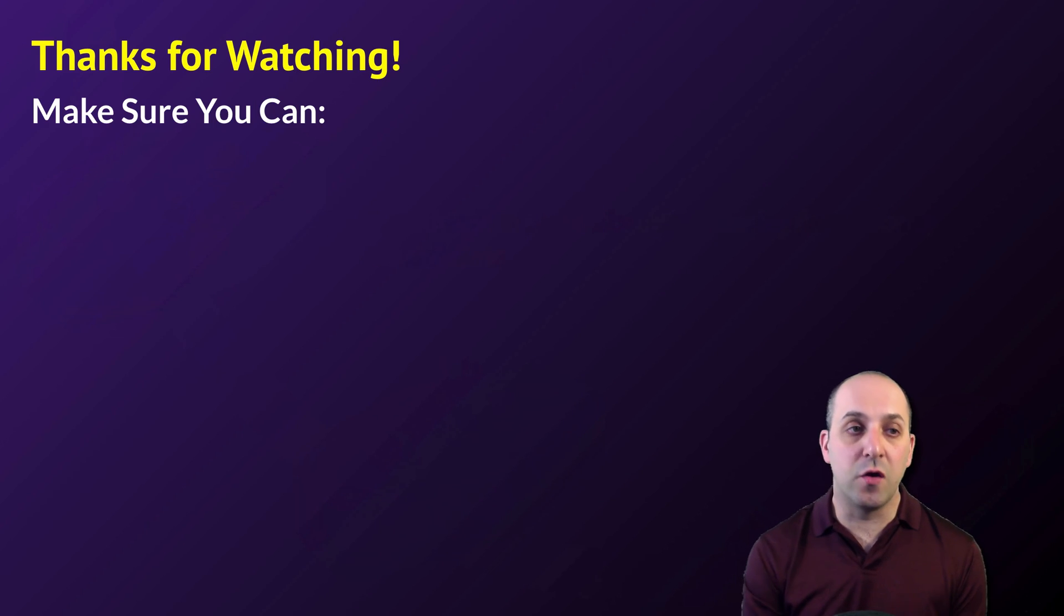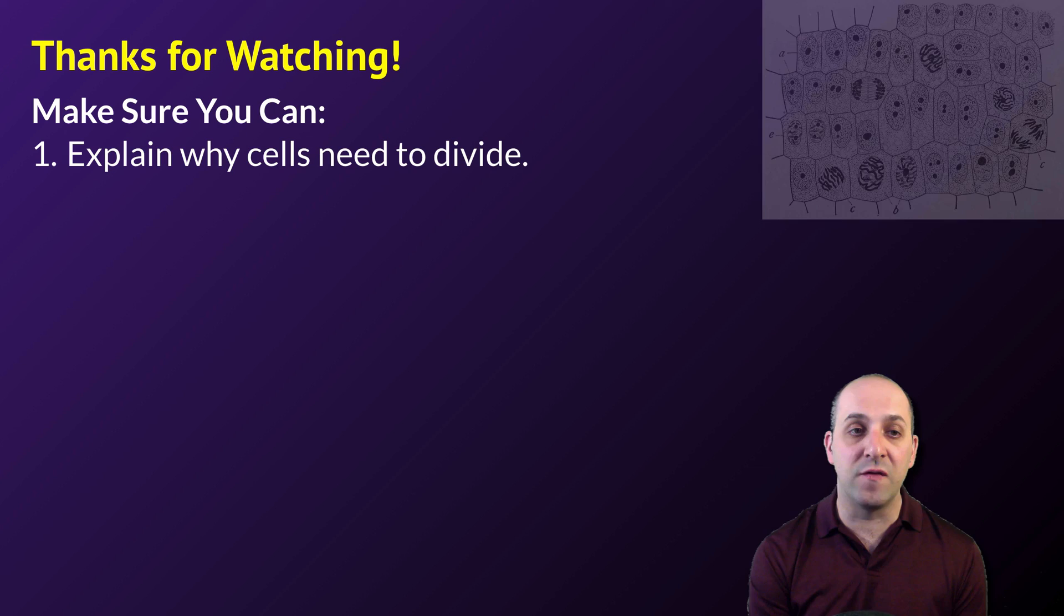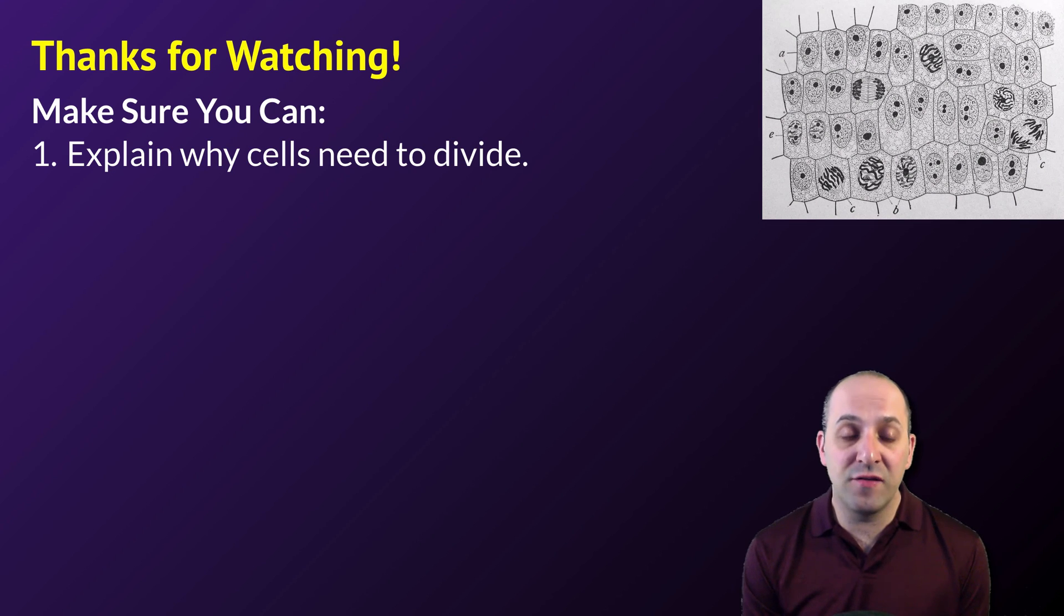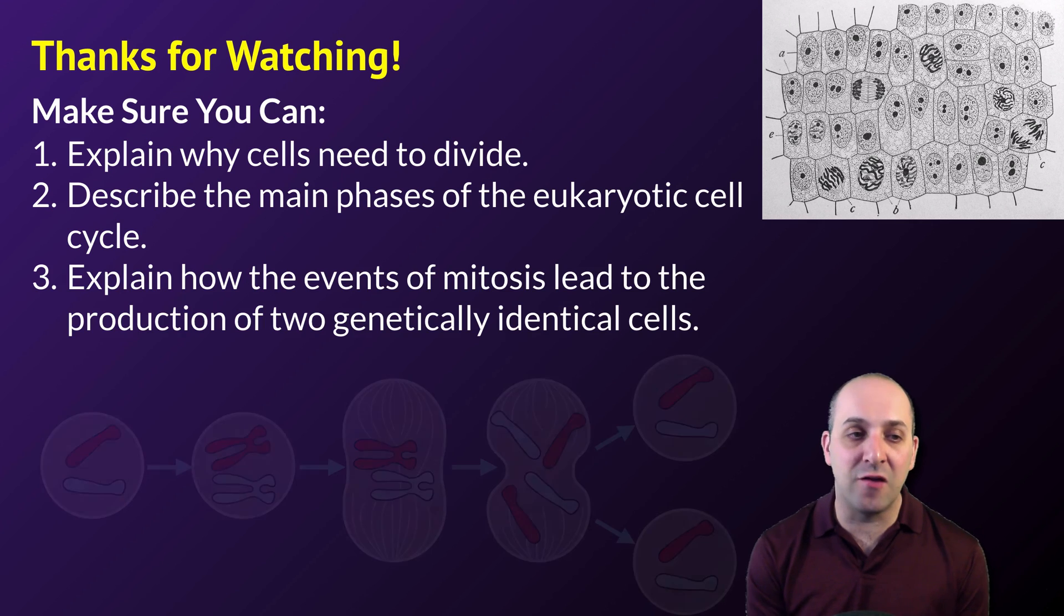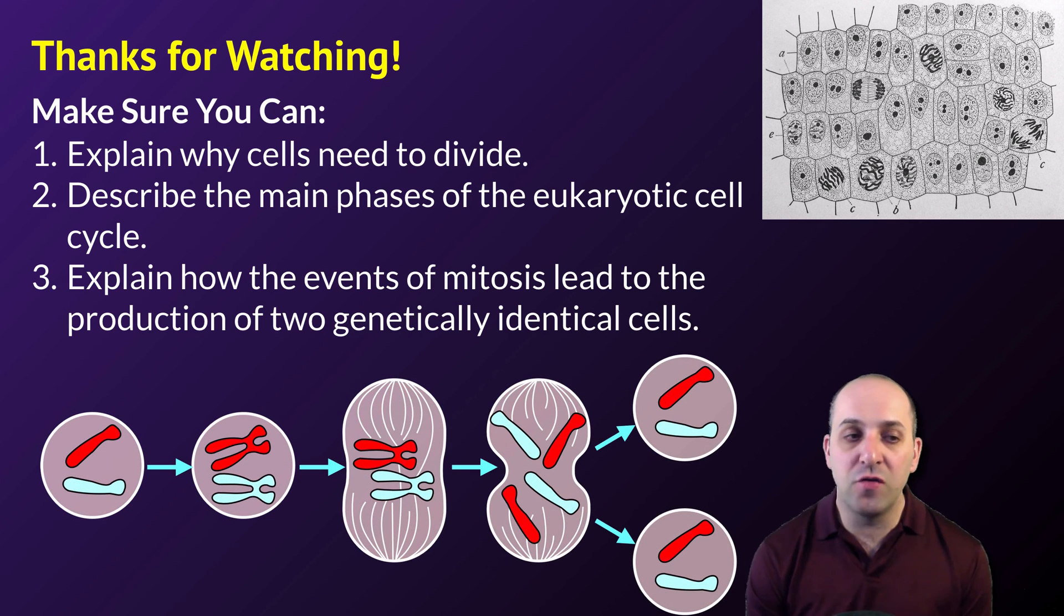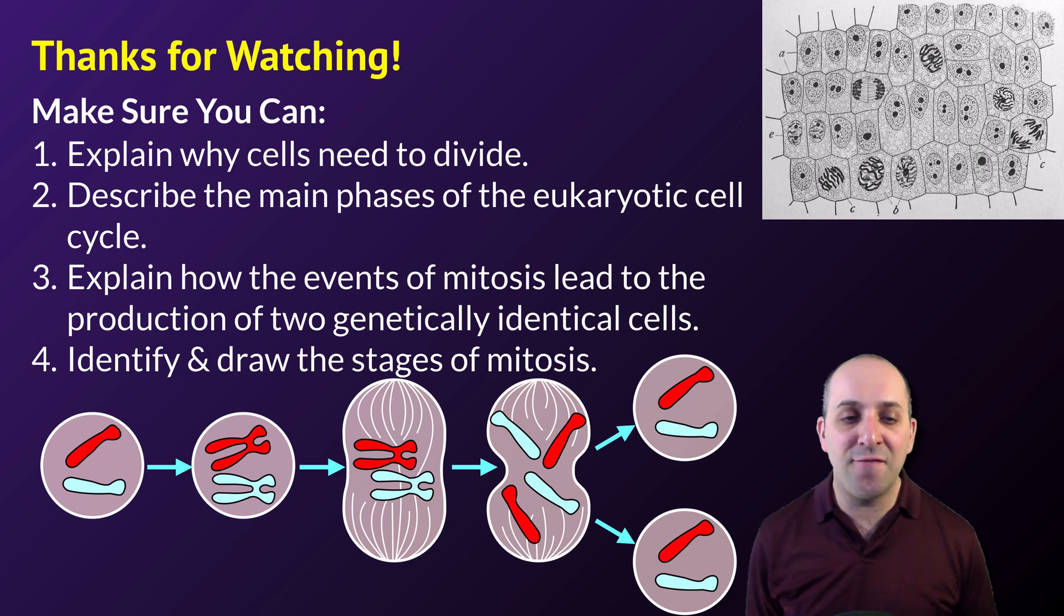Thanks so much for watching our discussion of mitosis. Make sure you can do the following things here at the end. Make sure you can explain why cells need to divide. Make sure you can describe the main phases of the eukaryotic cell cycle. Make sure you can explain how the events of mitosis lead to the production of two genetically identical cells. Make sure you can identify and draw the stages of mitosis in a cell that has a few unique chromosomes, maybe with a haploid number of two or something like that. If you can do those things, you're doing great.